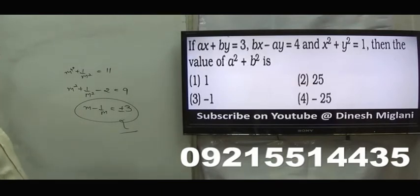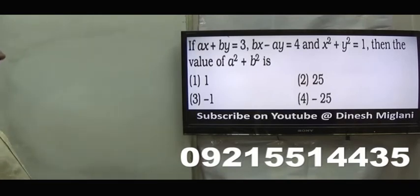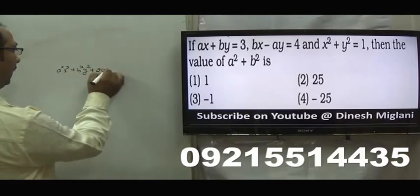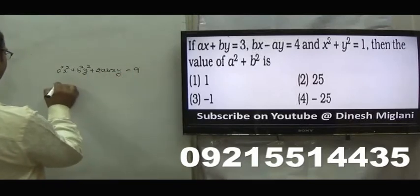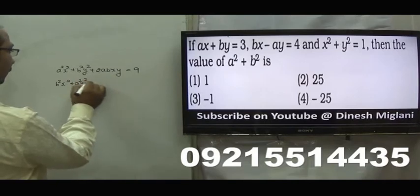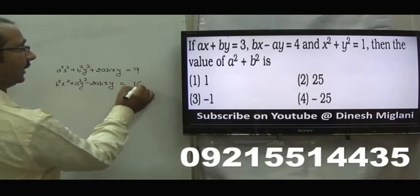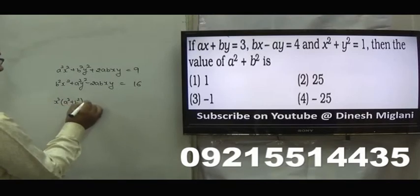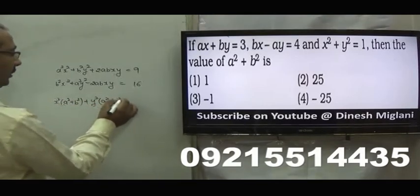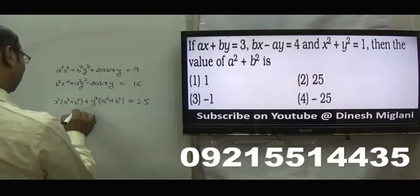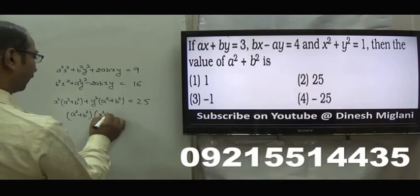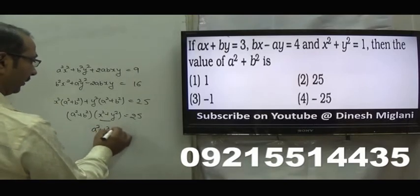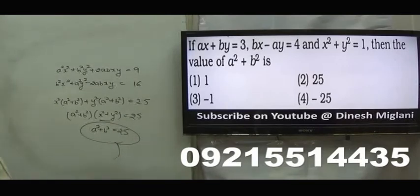It is given that ax plus by equal to 3, bx minus ay equal to 4. Squaring both sides and adding: a square x square plus b square y square plus 2abxy equal to 9, and b square x square plus a square y square minus 2abxy equal to 16. Adding both: x square with a square plus b square common, plus y square with a square plus b square common, equals 25. So a square plus b square into x square plus y square equal to 25. Since this equals 1, a square plus b square must equal 25. Second is my answer, 25.